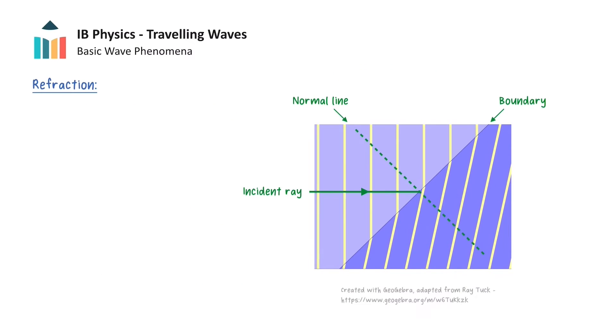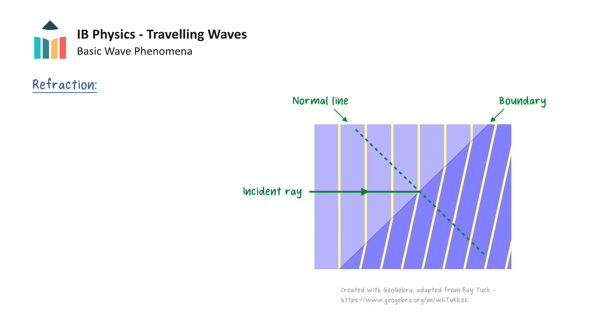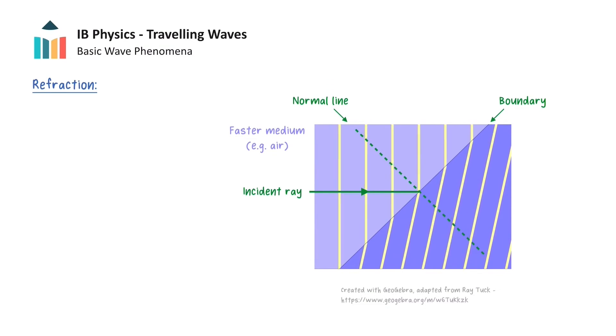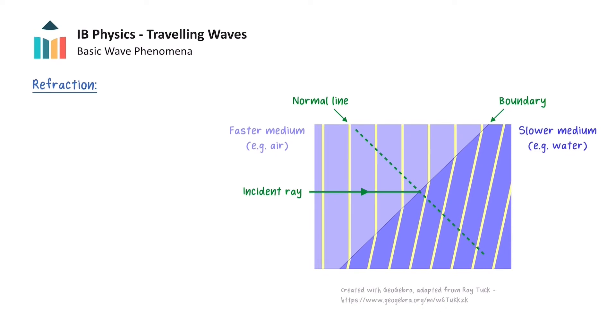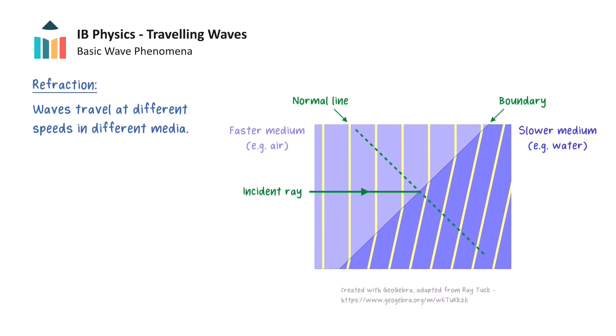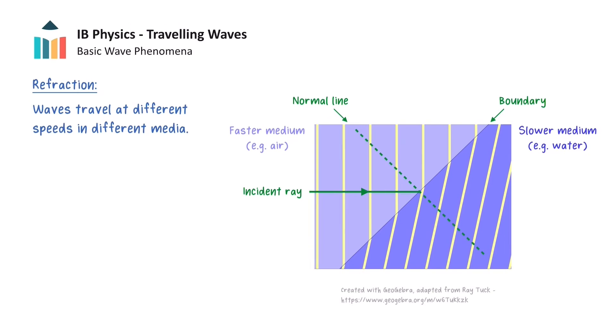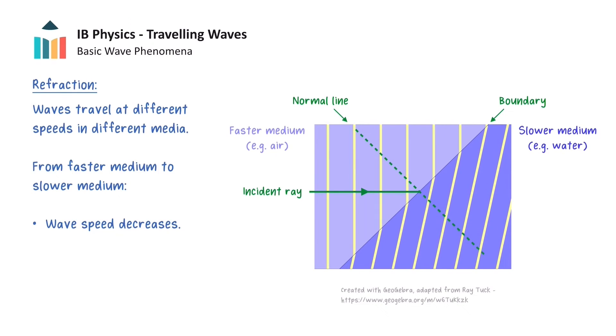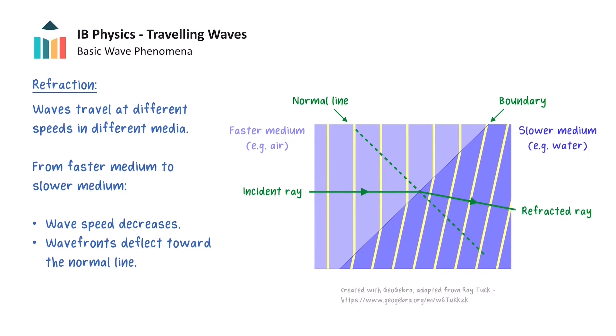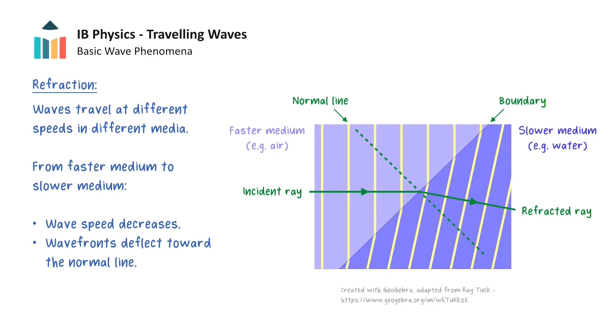The direction in which waves travel can also change due to a process called refraction. In this animation, the lighter blue section represents a faster medium such as air, and the darker blue section represents a slower medium such as water. We begin by noting that waves travel at different speeds in different media. When the wavefronts are incident at the boundary, one side of the wavefronts is slowed down before the other. This reduction in speed causes the wave to change direction toward the normal line of the boundary, and this can be represented by the refracted ray.